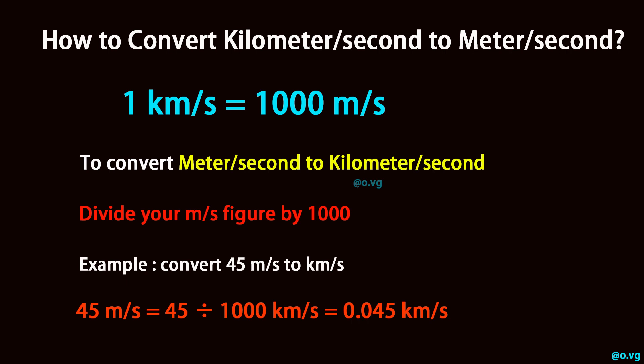Example: convert 45 meter per second to kilometer per second. 45 meter per second equals 45 divided by 1,000 kilometer per second, which equals 0.045 kilometer per second.